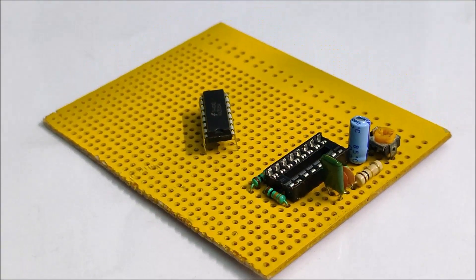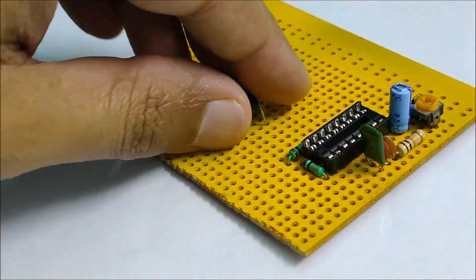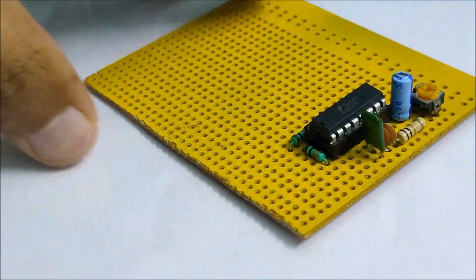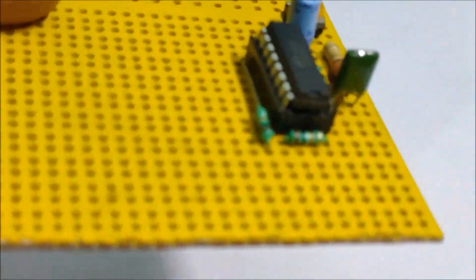After a satisfactory breadboard test, it is now time to move on to the soldering process and fixing all the components. Over here you can see I have already soldered the required parts for the SG3525 oscillator.